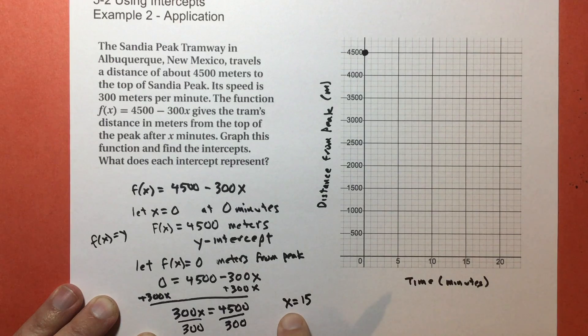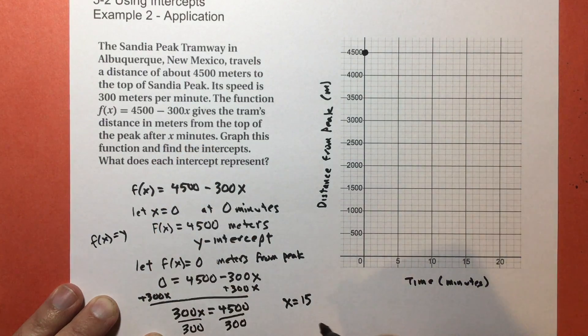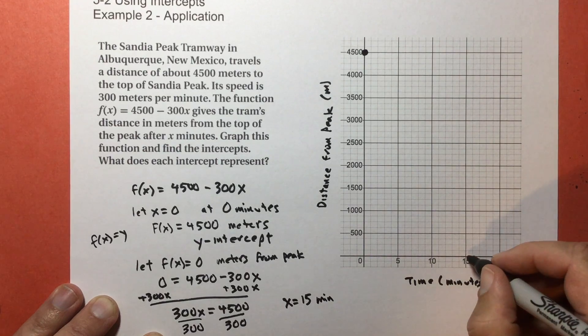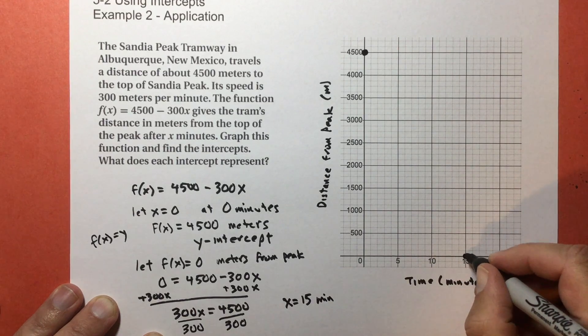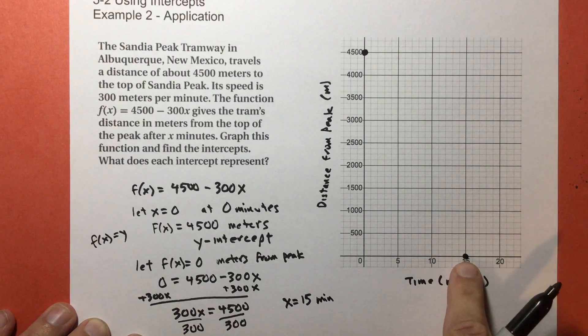And what does x represent again? x is going to represent the time in minutes that you've been riding. So it takes 15 minutes to get to the peak. And when x equals 15, and you are zero away from the peak, that's going to be that point right there.